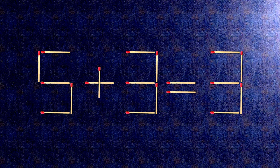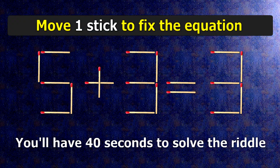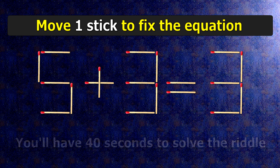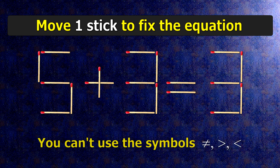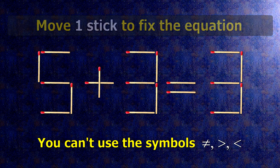We have the equality 5 plus 3 equals 3. Our equality is wrong. We need to move one match to make our equality correct.